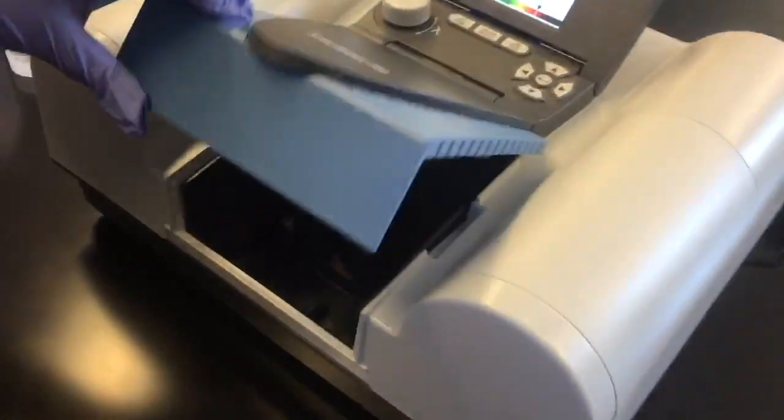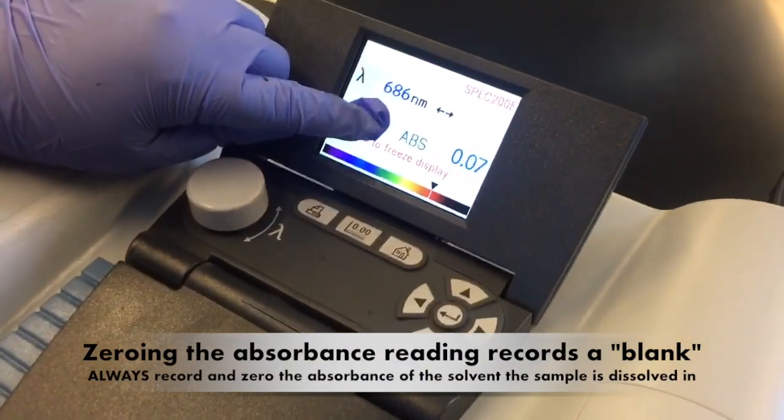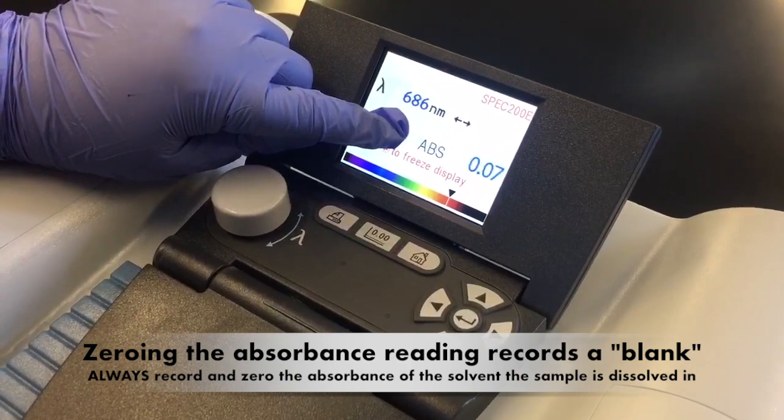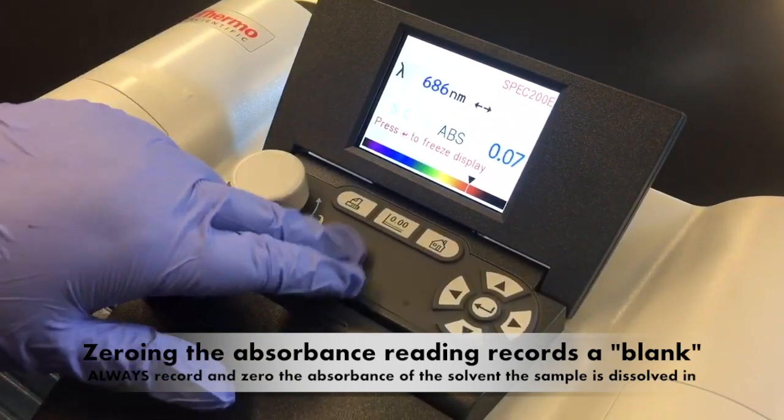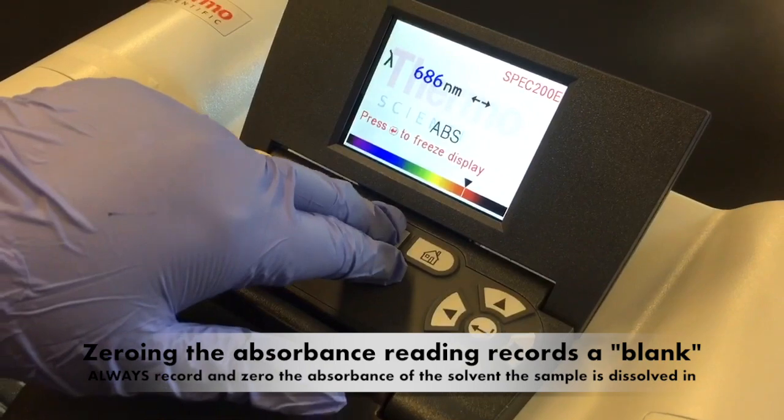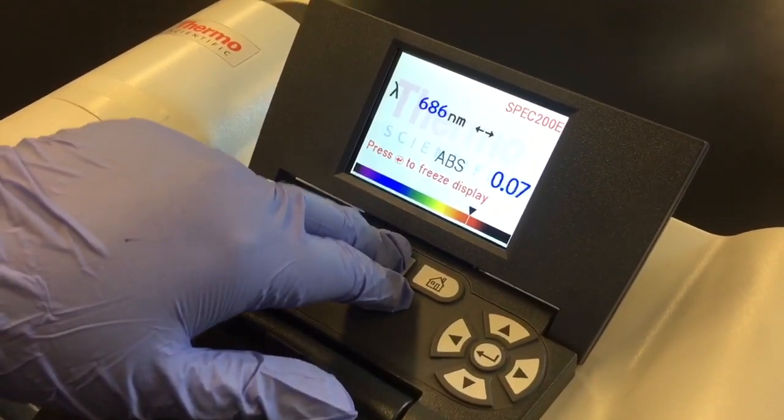Then you're going to close the lid. As you can see, it reads the absorbency rate at 0.07, and what you want to do is press the 0.00 button. This zeroes out the DI water so we can compare future solutions.